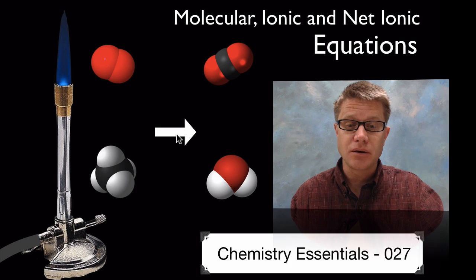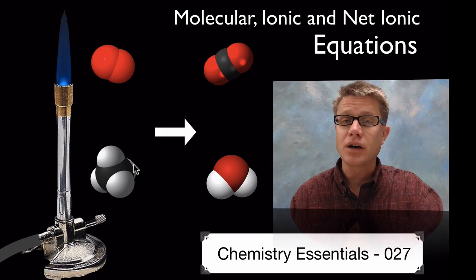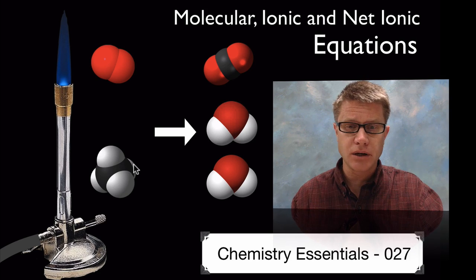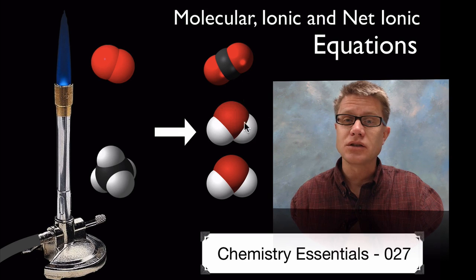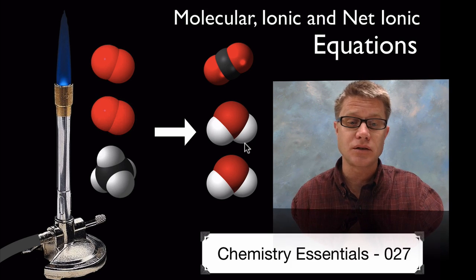Now if you look at this, the thing that should jump out right away is I don't have enough hydrogens on the right side compared to the left side. So I could add another water on the right side to balance it. Now I'm good on the hydrogens, but I've got too many oxygens on the right side, so I could add another oxygen molecule on the left side. Now we have a balanced chemical equation — we're just looking at the particulates here.